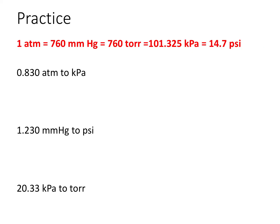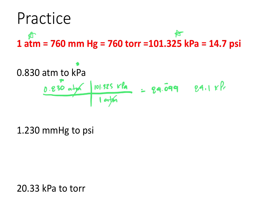Let's do some practice. We have 0.830 ATMs and we want to convert that to kilopascals. We start with 0.830 ATMs and set up a dimensional analysis problem using the relationship between kilopascals and atmospheres — a 1 to 101.325 ratio. Put 101.325 kilopascals on top and 1 ATM on the bottom so they cancel. Plugging into the calculator gives 84.099. With three significant figures to start, we round to 84.1 kilopascals as the final answer.